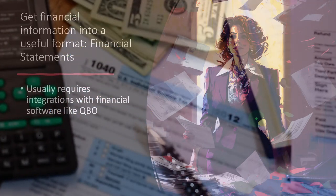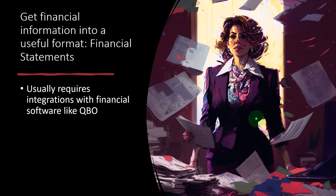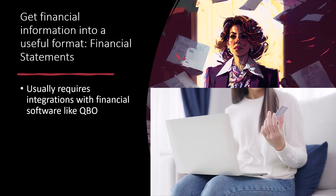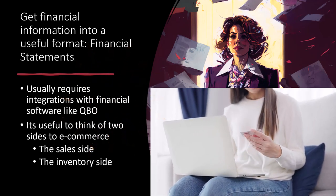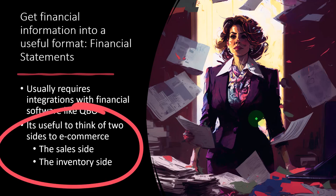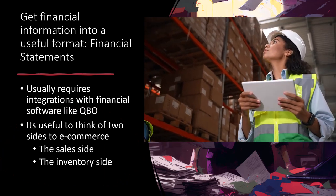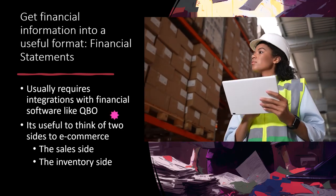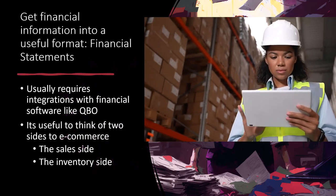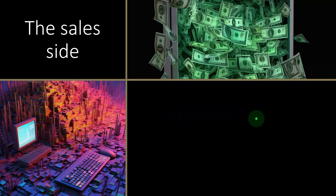This usually requires integrations with financial software like QuickBooks Online. We're thinking from an accounting perspective using QuickBooks Online, and we want to pull in financial information that is largely being generated from third-party applications such as Shopify or Amazon. It's useful to think of two sides of e-commerce transactions. With a full-service perpetual inventory system, when we sell inventory we have an impact on cost of goods sold and inventory, as well as the sales and cash side. But when pulling this information from a third-party application, it's useful to break those two up and consider a periodic inventory system instead.